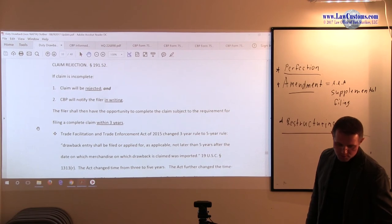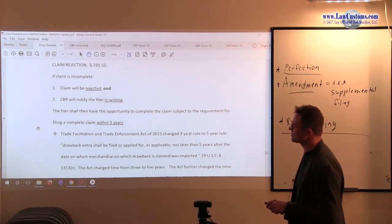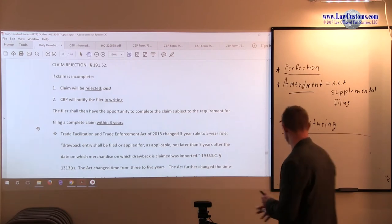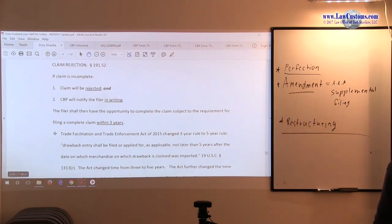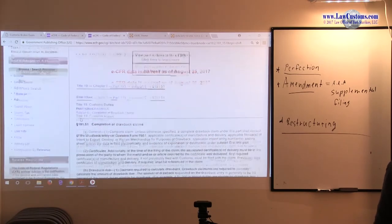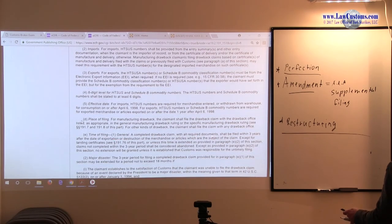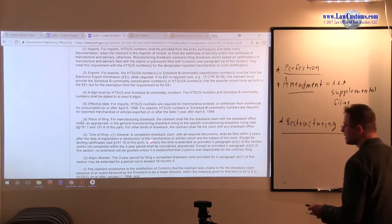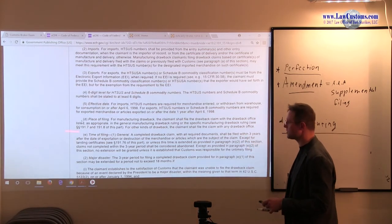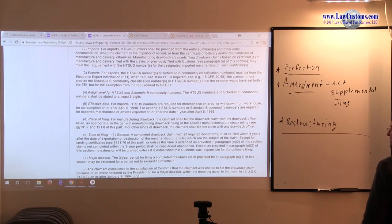The point here is that 19 CFR 191.51e time of filing requirement, it's not within three years from the date you received the notice. It's within three years from the date of exportation or destruction. And again, I am going to stress this again and again, the statute of limitations here is positive, and it's under section 191.51e. Time of filing must be filed within three years after the date of exportation and destruction. So if customers rejects it, you can still file again, as long as you meet the three-year requirement after the date of exportation and destruction. Not after you get the notice, but after the date of exportation and destruction. Very important stuff.